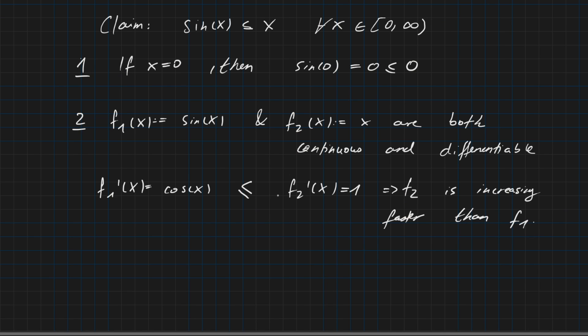But we've seen that for the first point of our interval, x = 0, both functions are equal. From here on, f₂ is increasing faster than f₁. This tells us that for the remaining numbers from our interval, x > sin(x).